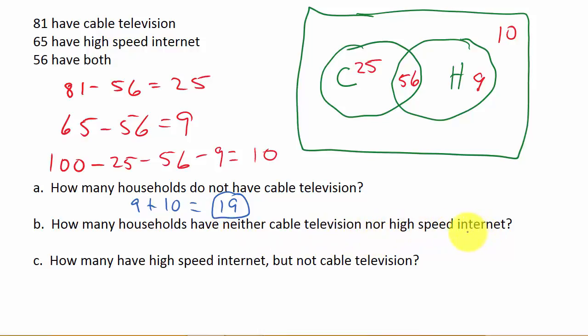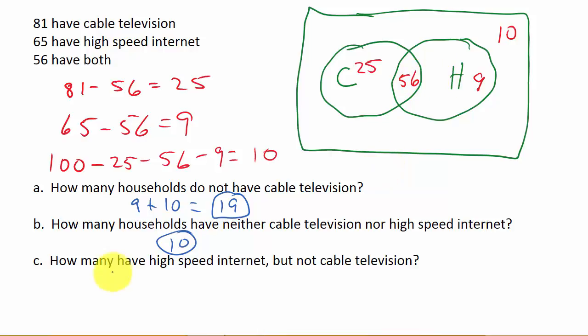How many households have neither cable television nor high-speed internet? We figured that out — 10 have neither one. Once you fill the Venn diagram out, the questions are easy to answer.